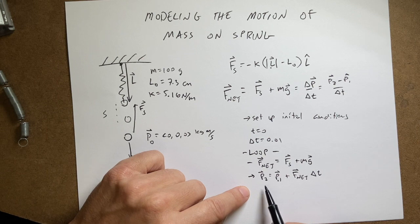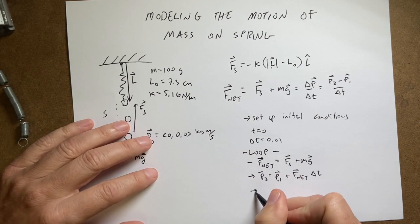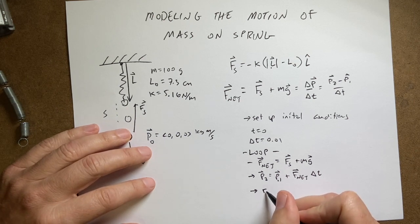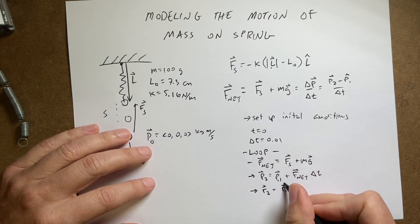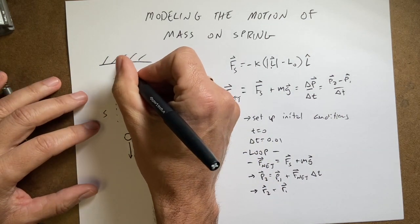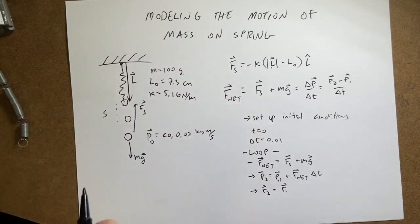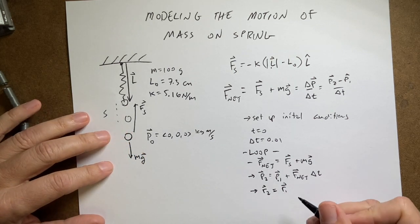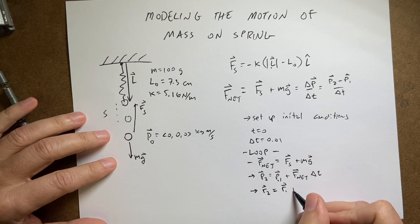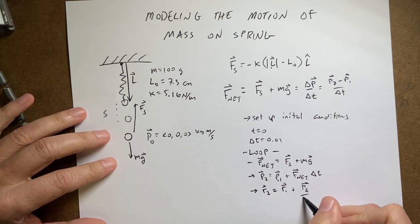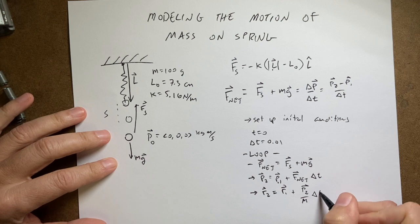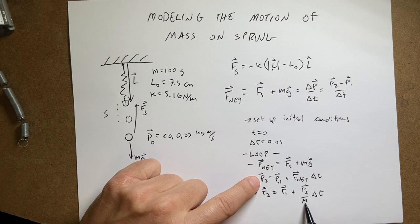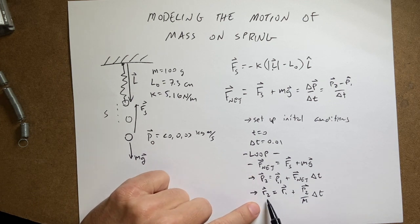Now I'm going to use the definition of average velocity to find the new position using the position update formula. And again, I talked about this in my previous video. So this would be R2 equals R1. This is the position. So this is actually going to be, this could be the R vector, but I'm actually going to calculate L in terms of R and I'll do that in the code. So let's just call this R1 plus P2 over M delta T. So I'm going to use the momentum I just calculated instead of the average velocity, divide by the mass to get the velocity and then use that to find the new position.